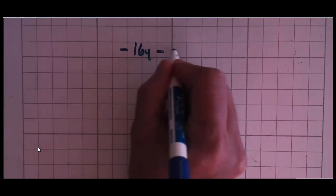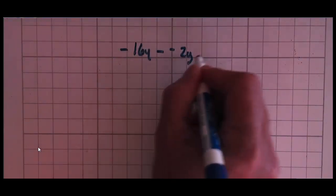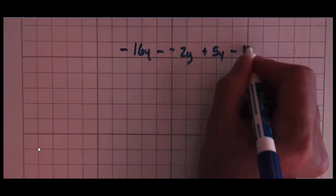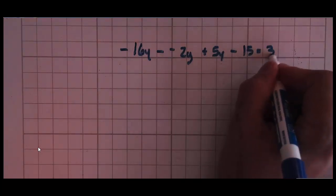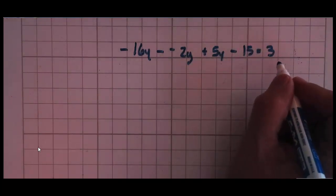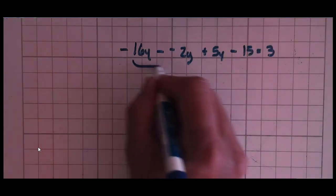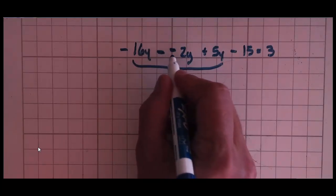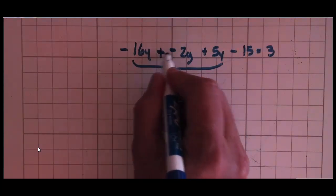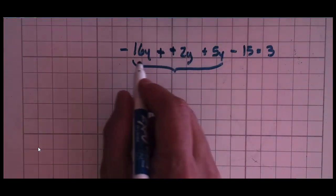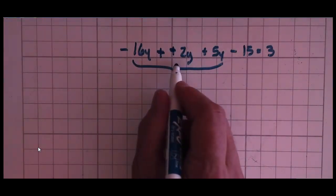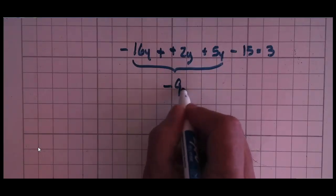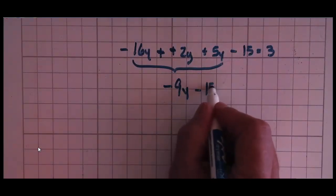Negative 16y minus negative 2y plus 5y minus 15 = 3. Oh my goodness, that seems like a difficult problem. It really isn't, it's really pretty straightforward. All you want to do is make sure you combine those, and I see that I'm subtracting a negative, and as you know from my previous video, subtracting a negative is the same thing as adding a positive. So let's see what we have here. Negative 16 plus 2 is negative 14, and negative 14 plus 5 is negative 9, so that whole ugly mess becomes negative 9y.